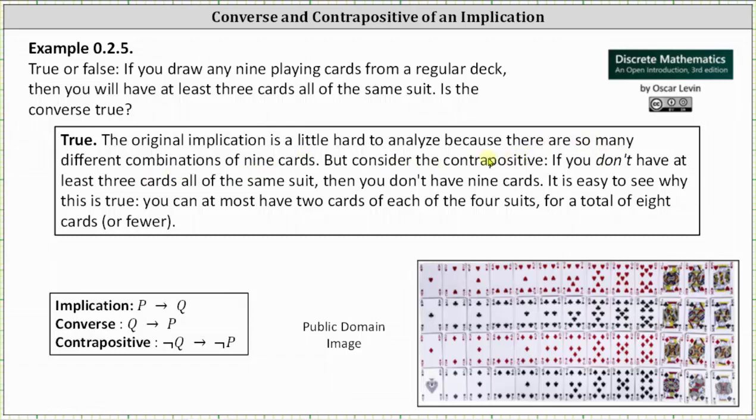The contrapositive of the original implication is if you don't have at least three cards all of the same suit then you don't have nine cards. It may be easier to see why this is true.